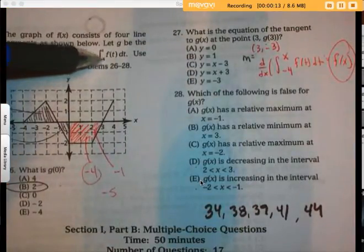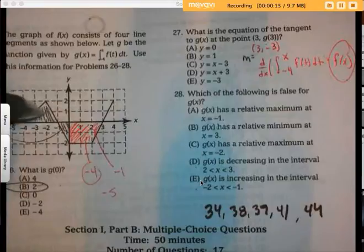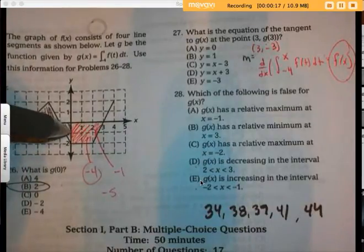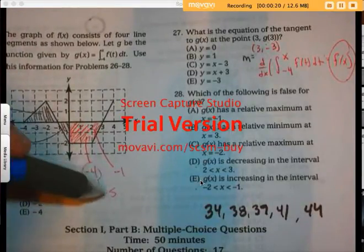That would be the integral from negative 4 to 3. So I took what I already found, that's 2, and I added it to the area here in red, negative 5.